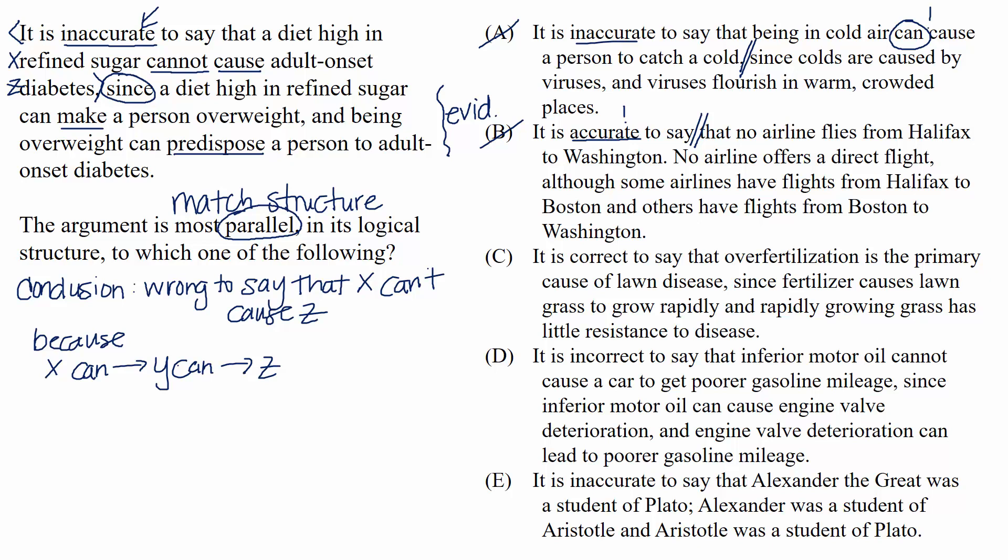C. It is correct to say, no, this is the same problem that choice B showed. This choice confirms something. It doesn't deny it. The whole choice reads, it is correct to say that over-fertilization is the primary cause of lawn disease, since fertilizer causes lawn grass to grow rapidly, and rapidly growing grass has little resistance to disease. So this doesn't work. It confirms that something is the cause of something else, and not only that it's the cause of something else, but it's the primary cause of something else. We want a choice that rejects a statement that denies causation.